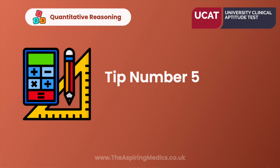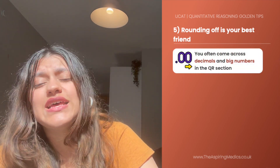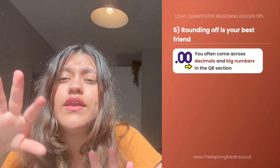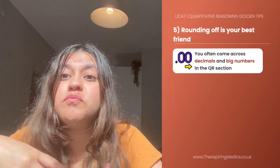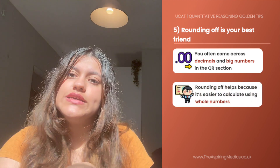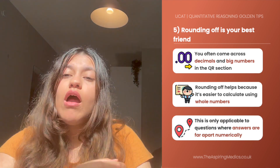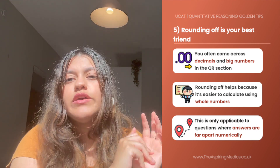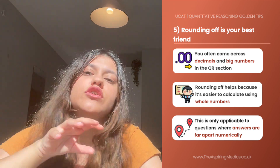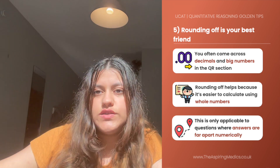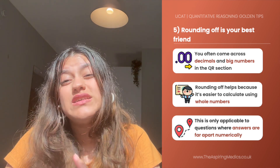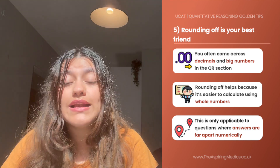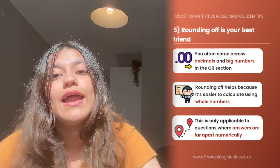Our fifth tip is that rounding off is your best friend. Often the UCAT will give you questions with lots of decimal points and really big numbers that are very hard to input into the calculator. Look at the answer choices — if they're really far apart, rounding off the values may be useful because you'll get an estimate of what the answer should be and then choose the answer choice closest to your estimate. This will save you a lot of time since you can do it mentally and avoid using the UCAT calculator.